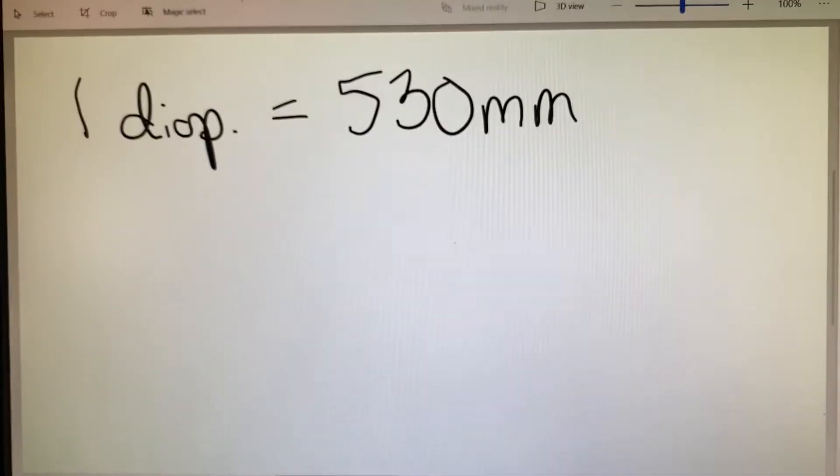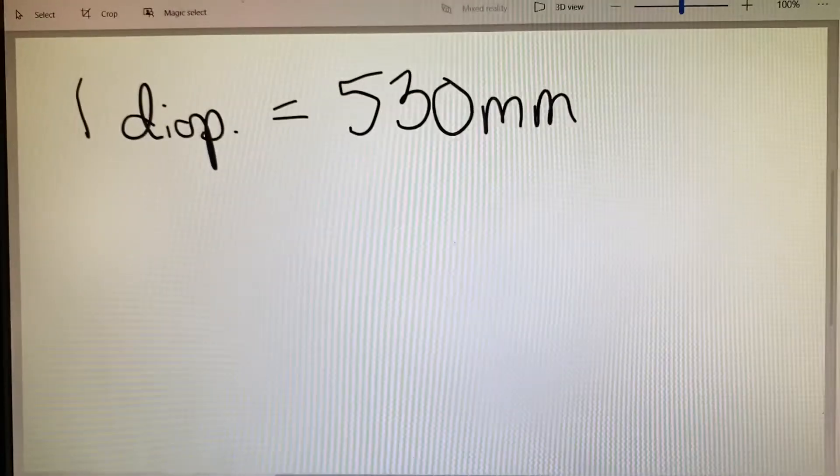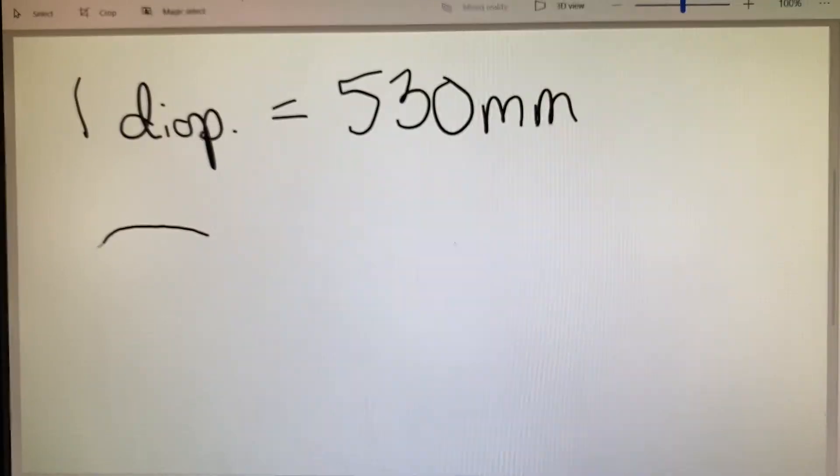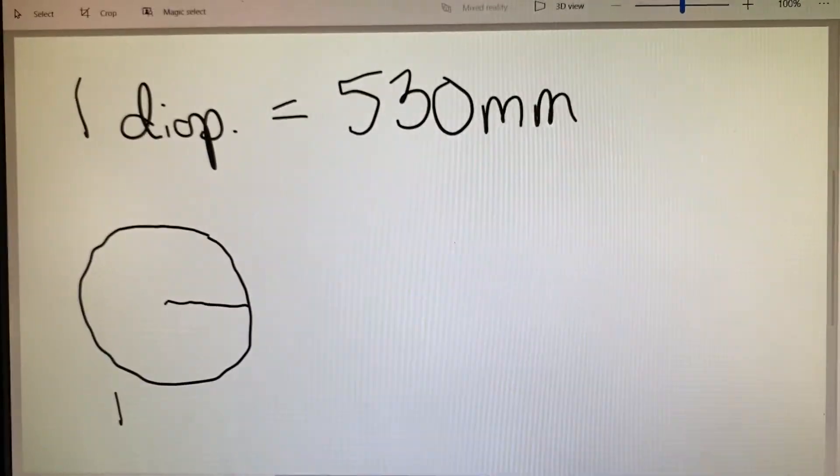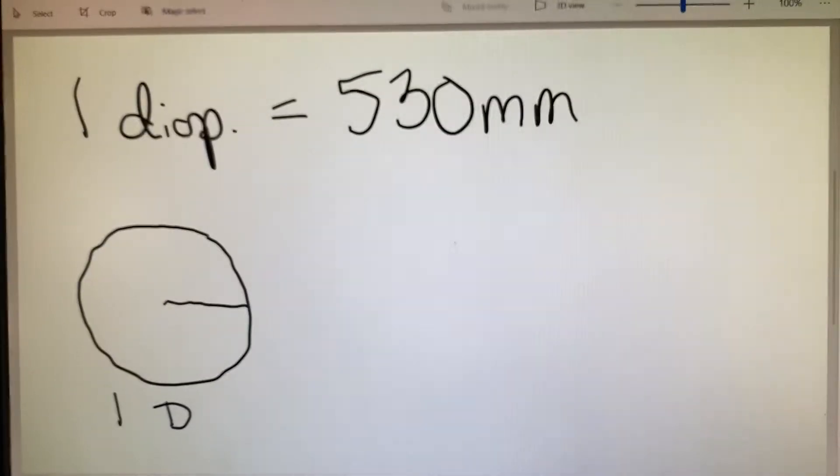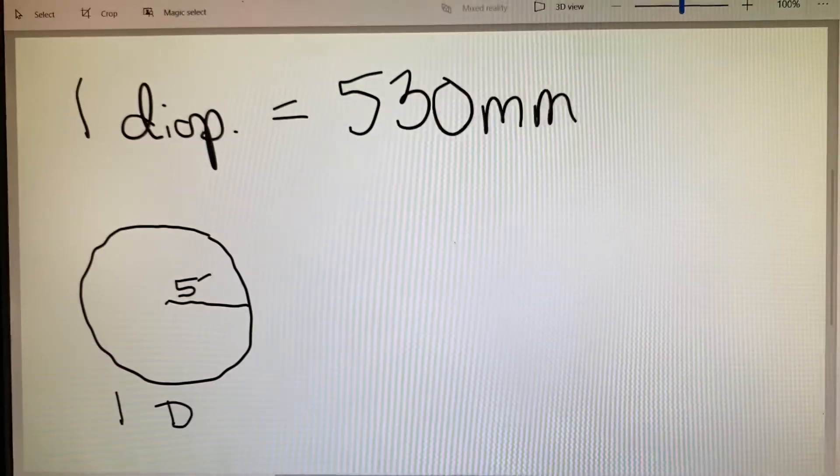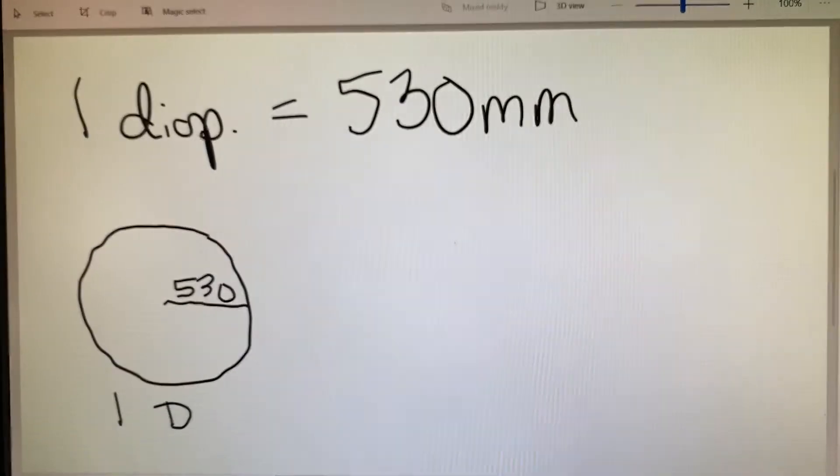Radius of curvature is just a way of describing the measurement of the curve of a lens from the optical center to the edge. So if this was a one diopter lens, we would say that the radius of curvature was 530 millimeters.